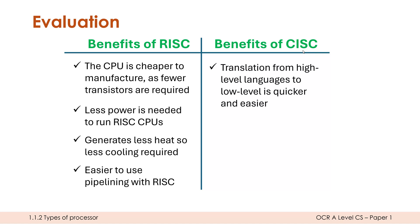The key benefits of CISC relate to being easier for programmers writing software. Programmers typically write in a high-level language like Python. Translating that high-level language into binary is quicker and easier when targeting a CISC processor, because the wide instruction set more closely maps to the wide range of constructs in a high-level language. Converting from high-level to RISC is harder since you must map many constructs to a much smaller instruction set.